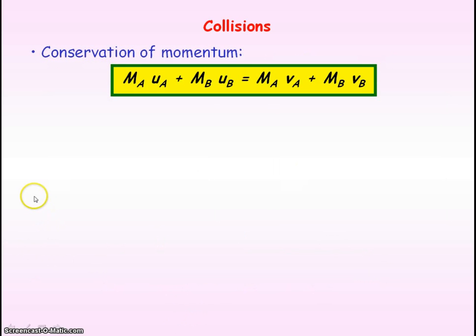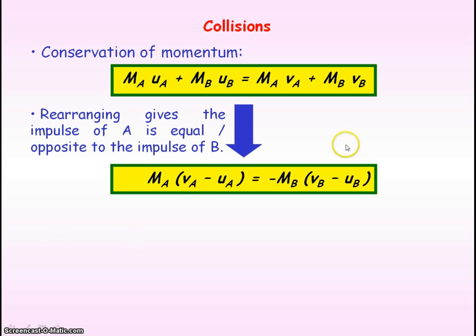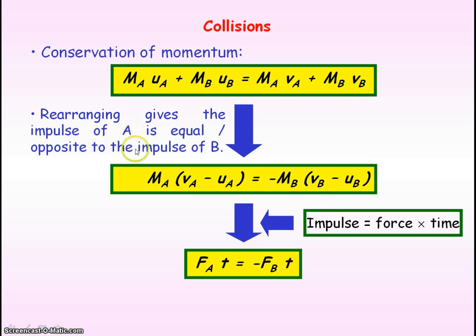If we rearrange this equation, we can show that the impulse of A will be equal and opposite to the impulse of B. We put all the A terms to one side and all the B terms to the other. An impulse is the same as a change in momentum, so the change in momentum of A is equal but opposite to the change in momentum of B. The definition of impulse is the force multiplied by the time the force acts. So the impulse of A equals the force on A times time, and the impulse of B equals the force on B times time.